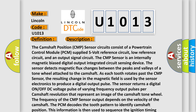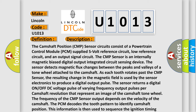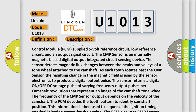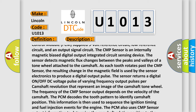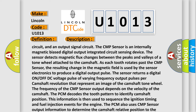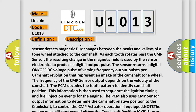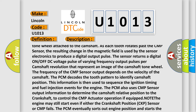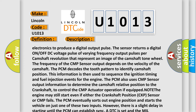The camshaft position (CMP) sensor circuits consist of a powertrain control module (PCM) supplied 5-volt reference circuit, low reference circuit, and an output signal circuit. The CMP sensor is an internally magnetic-biased digital output integrated circuit sensing device. It detects magnetic flux changes between the peaks and valleys of a tone wheel attached to the camshaft as each tooth rotates past the sensor, producing a digital output pulse. The sensor returns a digital ON/OFF DC voltage pulse of varying frequency per camshaft revolution. The PCM decodes the tooth pattern to identify camshaft position, which is then used to sequence the ignition timing and fuel injection events for the engine.